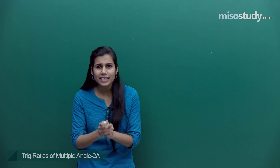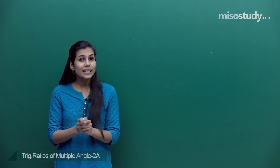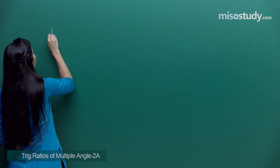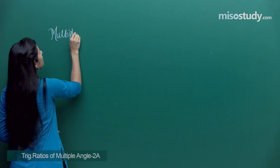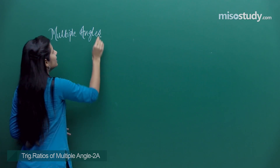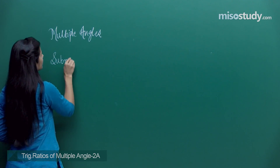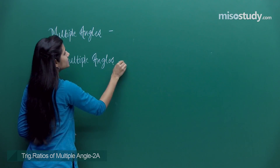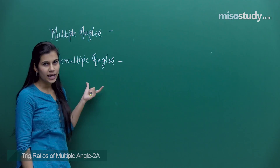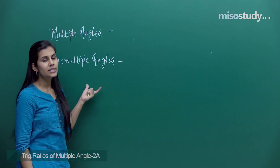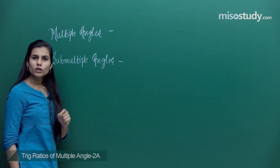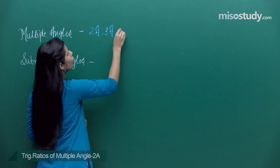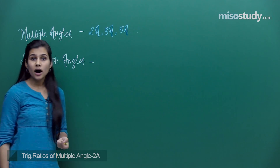Today again we are going to deal with some very useful formulas, but they would be related to something known as multiple angles or sub-multiple angles. So let me first tell you what I mean by multiple angles — if 'a' is an angle, then twice of a, thrice of a, or five times a — all these are multiple angles.